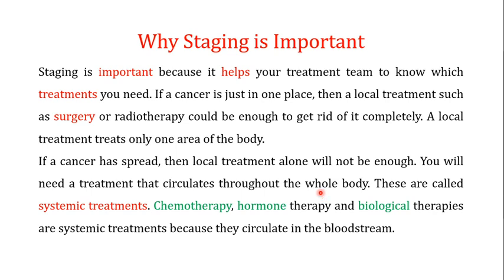If the cancer is just in one place — that is, localized — then you go for a local treatment such as surgery or radiotherapy, which could be enough to get rid of that cancer completely. A local treatment treats only one area of the body. If the cancer has spread, then local treatment alone will not be enough and you will need a treatment that circulates throughout the whole body. These are known as systemic treatments, and the most important types are chemotherapy, hormone therapy, and biological therapies, because these therapies circulate in the bloodstream.